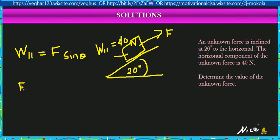We'll divide by sine. The horizontal component is parallel, so we put 40 for the horizontal component and divide by sine of 20 degrees.